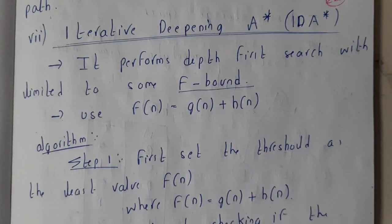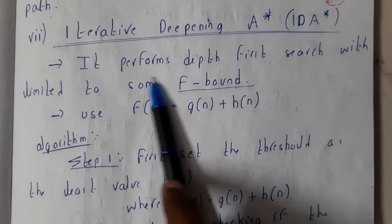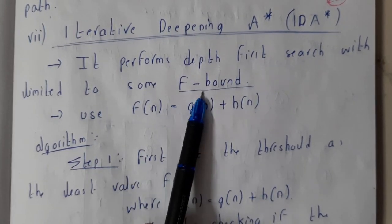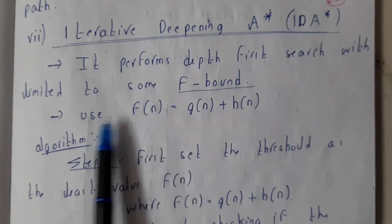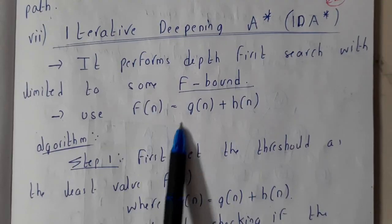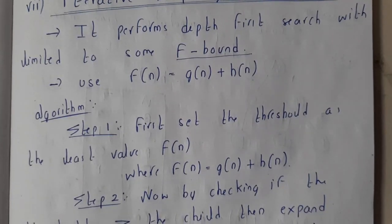So once we are going through the algorithm and problem, you'll be having a clear idea, don't worry. So it provides a depth-first search with the limit to some particular bound. It uses the formula f(n) equals g(n) plus h(n). The same formula guys, please remember that's the formula for heuristic searching.